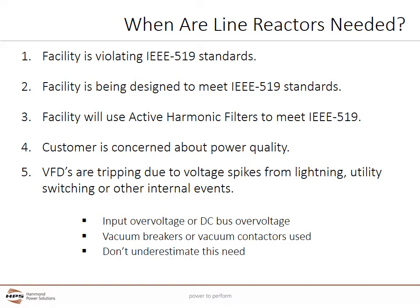Line Reactors should be considered whenever a customer is concerned about power quality. Line Reactors can help mitigate VFDs which are tripping due to voltage spikes from lightning, utility switching, or other internal events. This nuisance tripping shows up when input overvoltage or DC bus overvoltage faults occur.